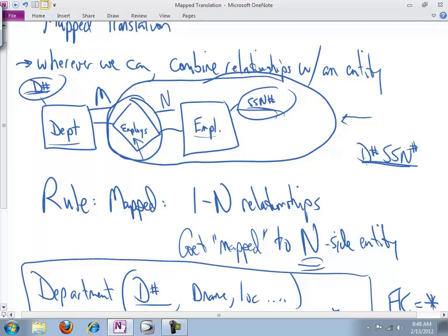However, where is department number native? In the department table. Where is social security number native? In the employee table. So they're also acting as foreign keys in a way. So you have both at the same time.